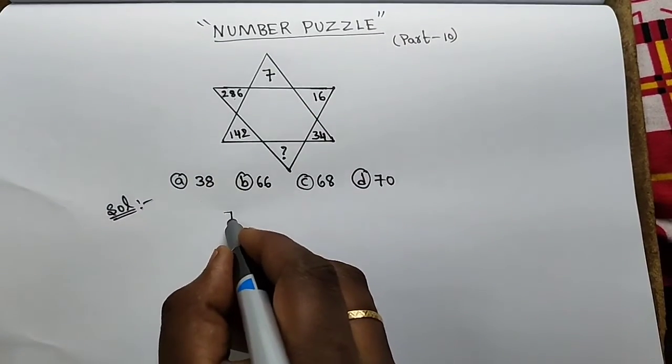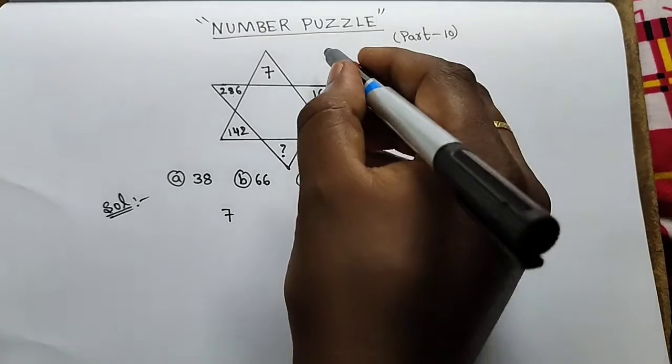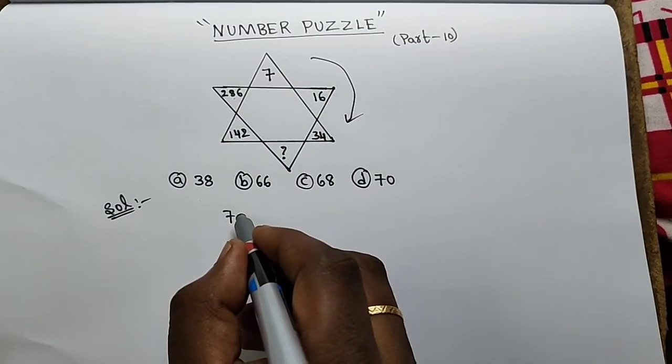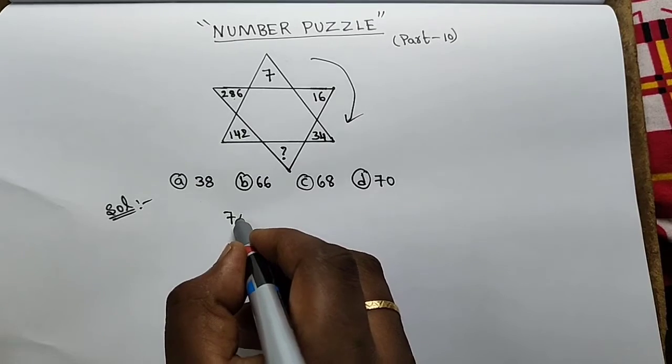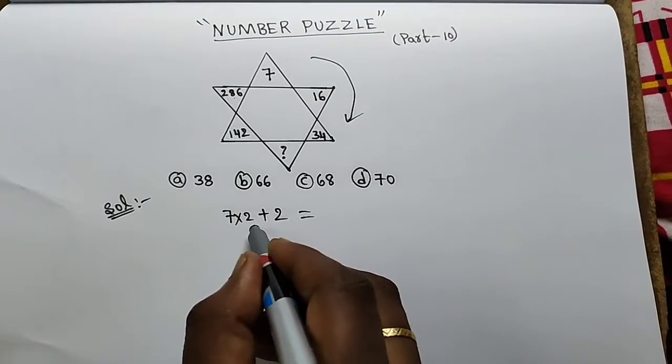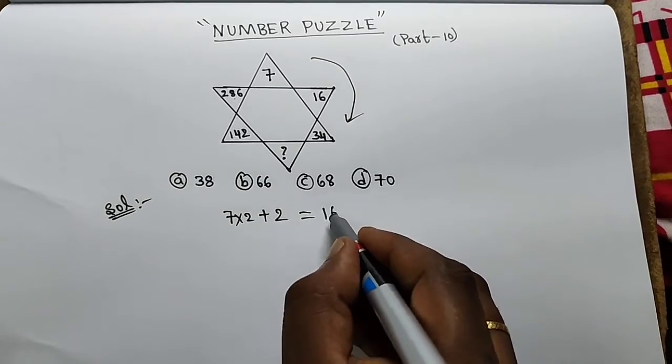The pattern is followed in clockwise direction. 7 into 2 plus 2. 7 times 2 is 14. 14 plus 2 equals 16.